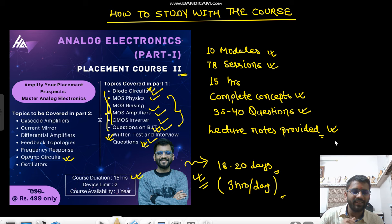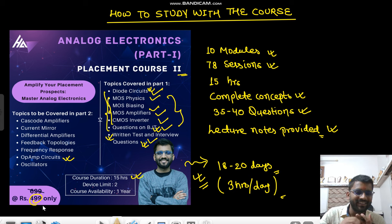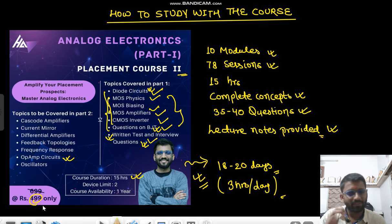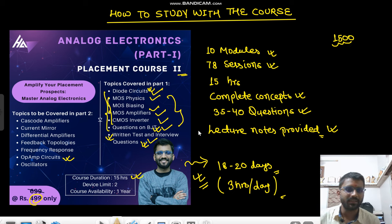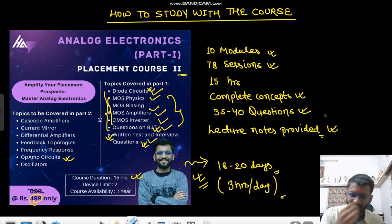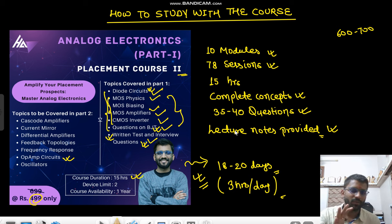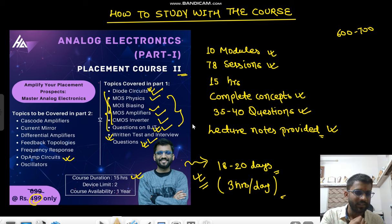If you haven't purchased the course and feel like purchasing it, you can do so. There was one query: is the price of 499 for both parts or just one part? The 499 is for Part One only. Part Two will have a different price, but it won't be high — within 1500 total, your complete placement preparation for the analog domain will be covered. Part Two won't go above 600 or 700 at most.